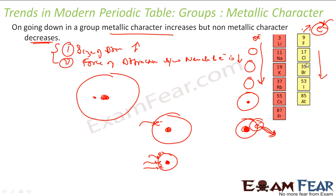Please understand the concept involved here. In both cases, the size of the atom increases and the force of attraction decreases. If the force of attraction decreases, it is difficult to hold an electron, so the electron goes out easily and the element becomes more metallic in nature. But since the force of attraction is less, you are not able to attract electrons and thus you are less non-metallic in nature.